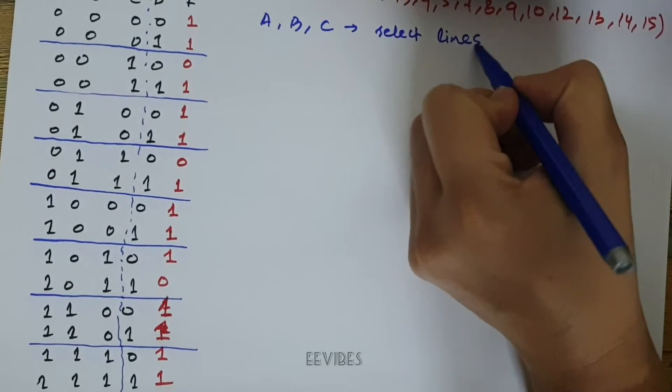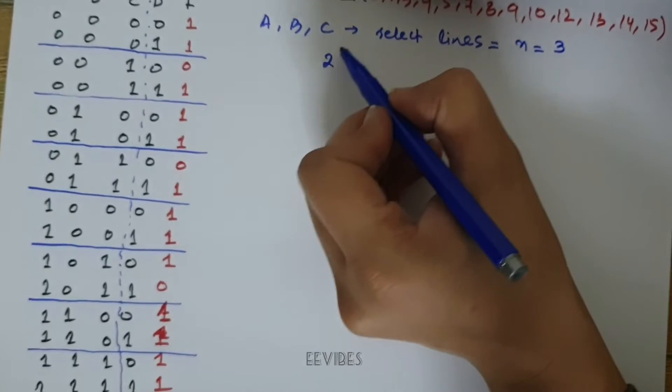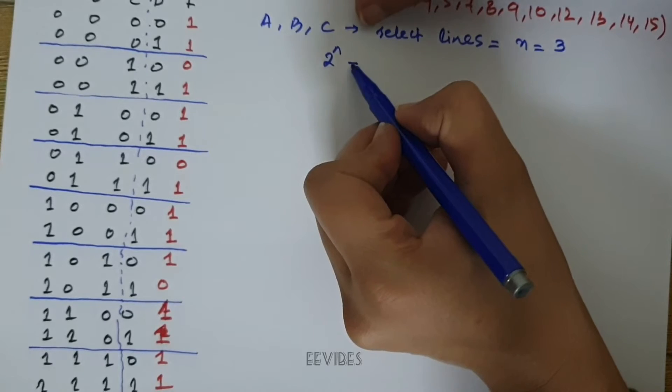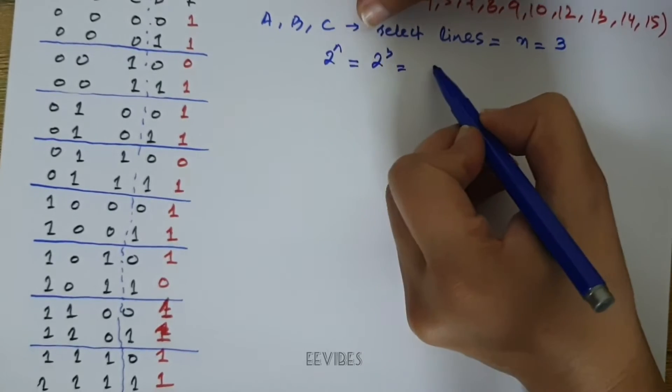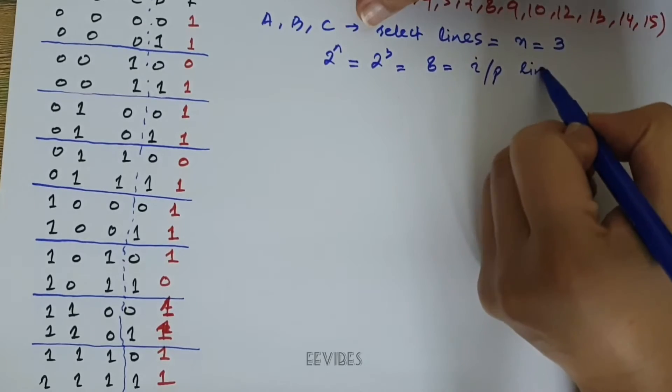which is equal to n, which is equal to 3. We know that for n select lines we have 2 raised to power n, which is equal to 2 raised to power 3, and it's equal to 8 input lines.